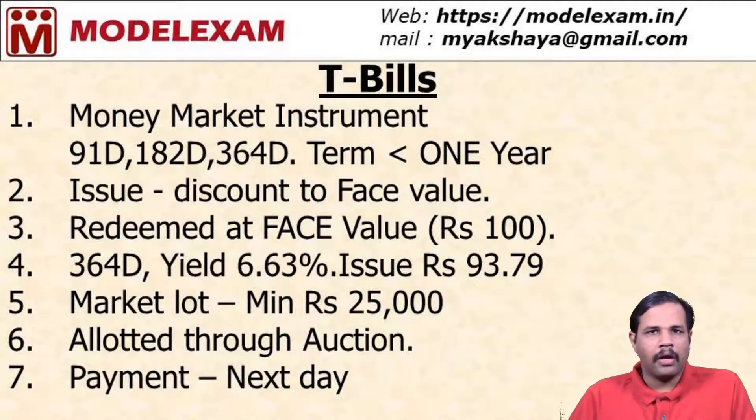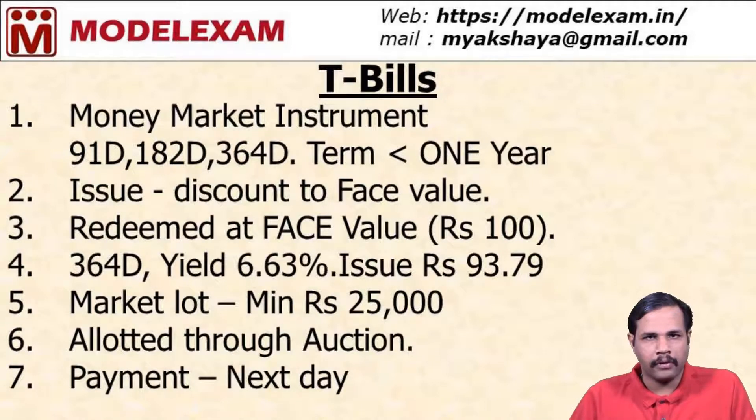Treasury bills are allotted through an auction process and normally the settlement takes place the next day, that is T+1 settlement.